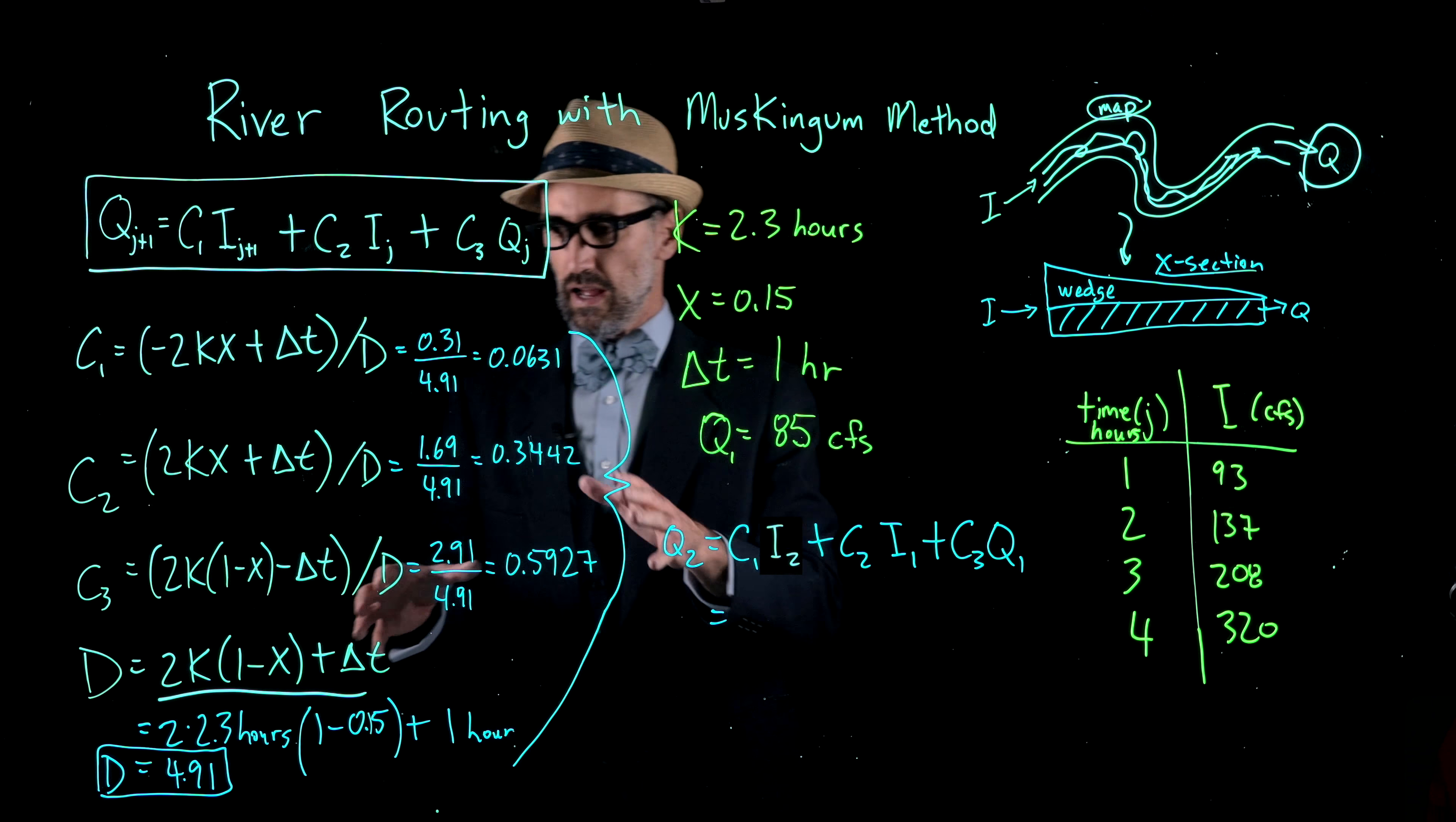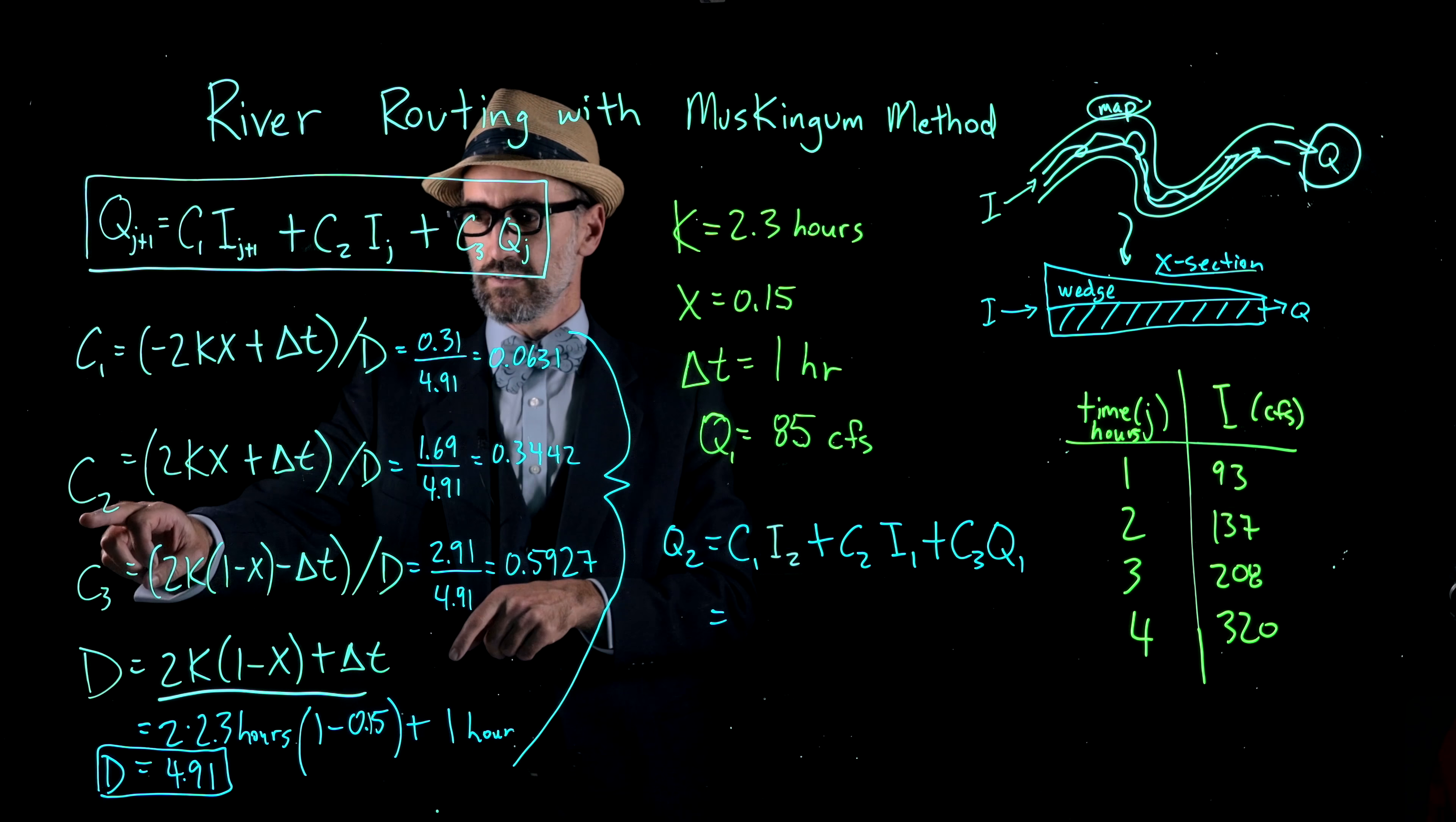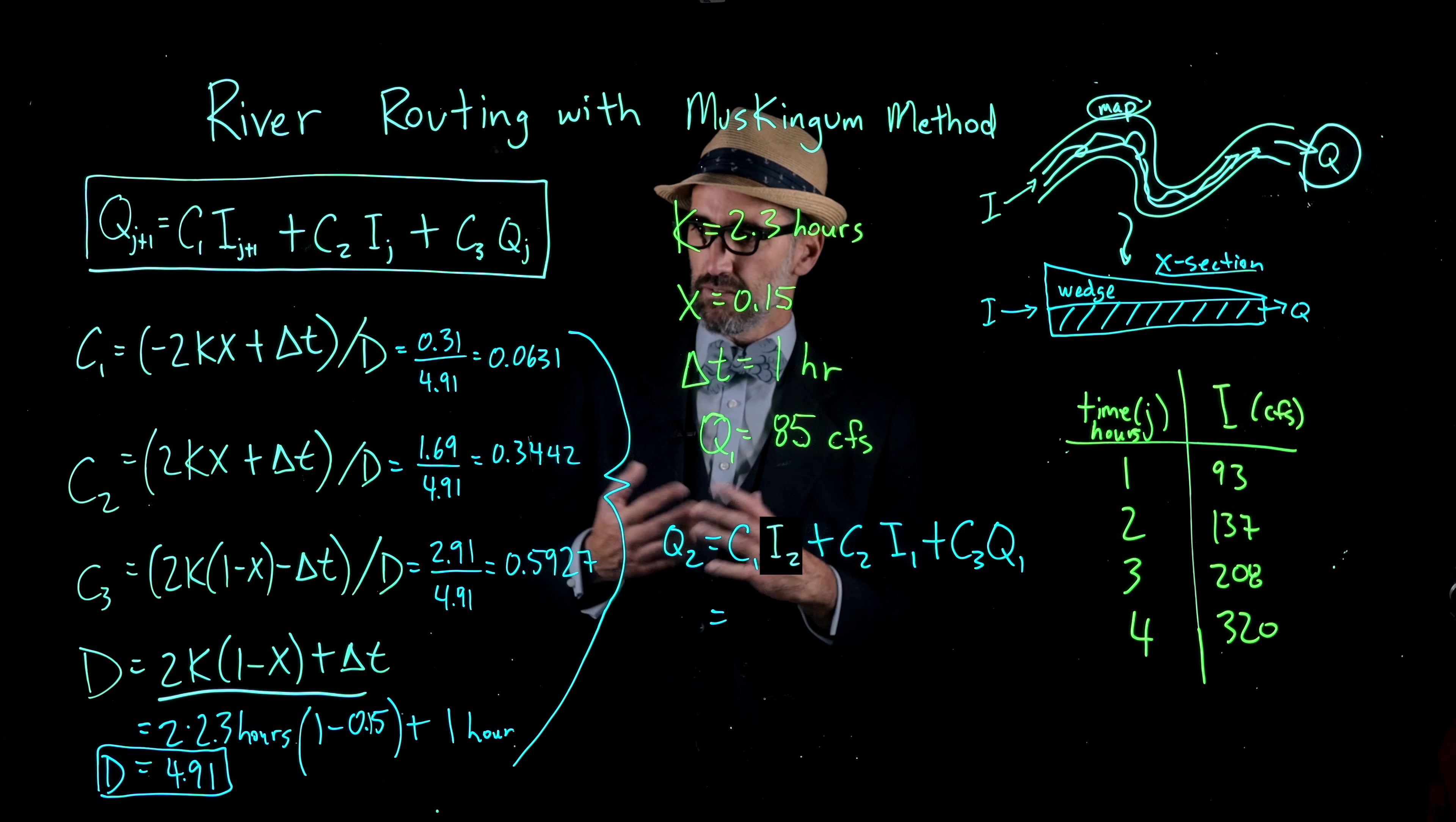I have just advanced our calculations slightly. We've already calculated this D, and here I've calculated each of these other coefficients C1, C2, C3, which are equal to 0.0631, 0.3442, 0.0527, and 0.0527 respectively.